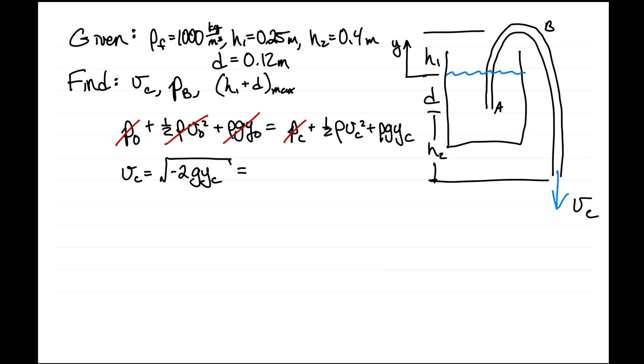So that's the square root of 2 times 9.8 meters per second squared. Yc is minus, so we cancel the minus out here, and Yc is d plus h2, so that's 0.52 meters. Plugging our numbers in, we get that flow rate is 3.2 meters per second.